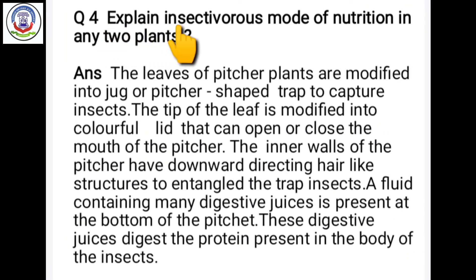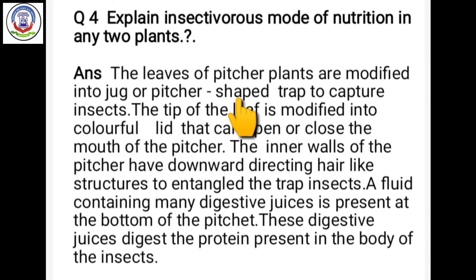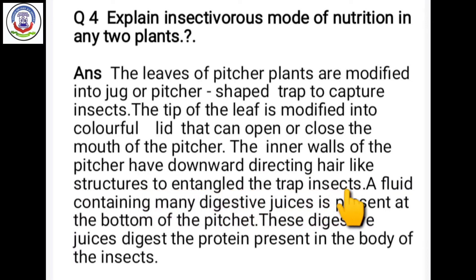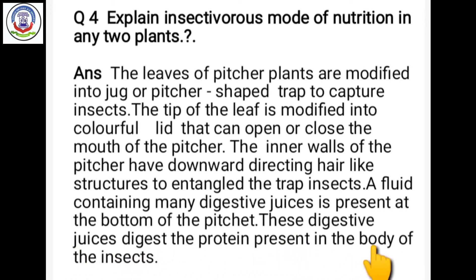Question number 4: Explain the insectivorous mode of nutrition in any two plants. The leaves of the pitcher plant are modified into jug or pitcher-shaped traps to capture insects. The tip of the leaf is modified into a colorful lid that can open or close the mouth of the pitcher. The inner walls have downward-directing hair-like structures to entangle the trapped insect. A fluid containing digestive juices is present at the bottom of the pitcher, which digests the protein present in the body of the insect.